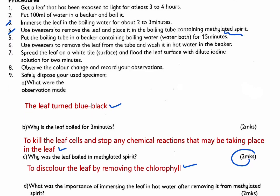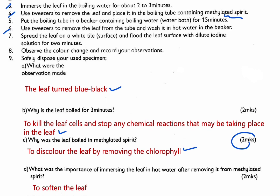Part D asks: what is the importance of immersing the leaf in hot water after removing it from the denatured spirit? This is step number 6. The reason is to soften the leaf. We insert it in hot water in order to soften it, and we get those two marks.